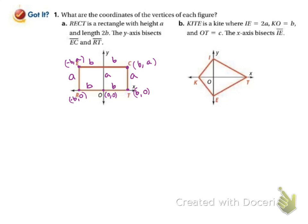Let's try this kite. We're told that IE, the whole vertical length, is 2a, and the x-axis bisects IE, so this is a and this is a. KO is b and OT is c. Starting at the origin at (0, 0) and going up — going up changes y, so x is still 0 and we went up a, giving (0, a). Going back to the origin and moving down — going down changes y, x stays 0, and we went down a, so y is negative a, giving (0, −a).